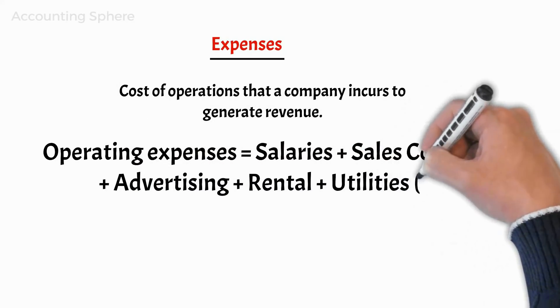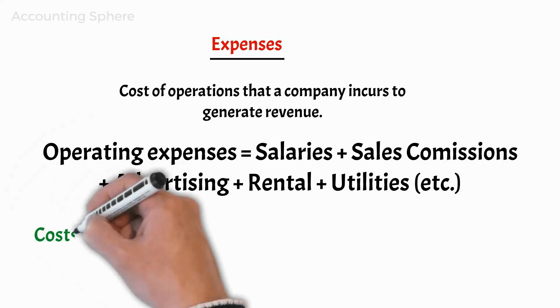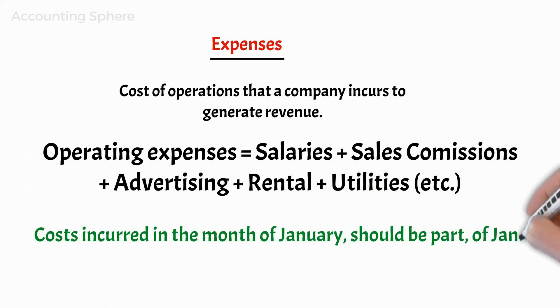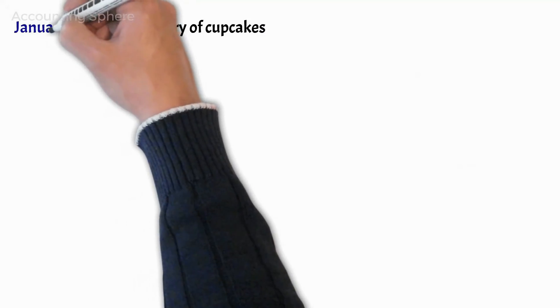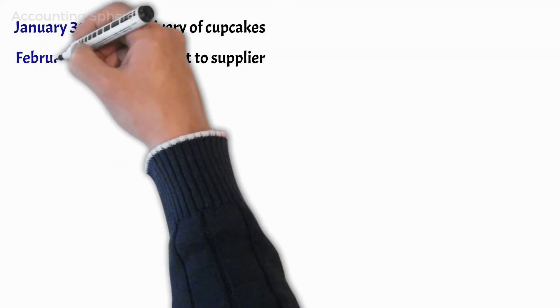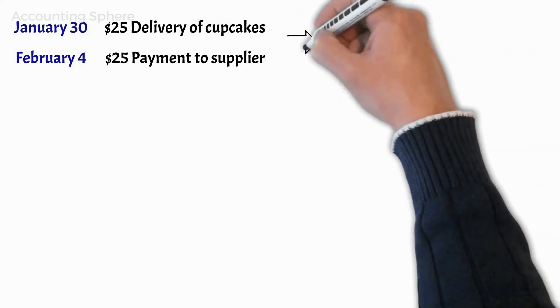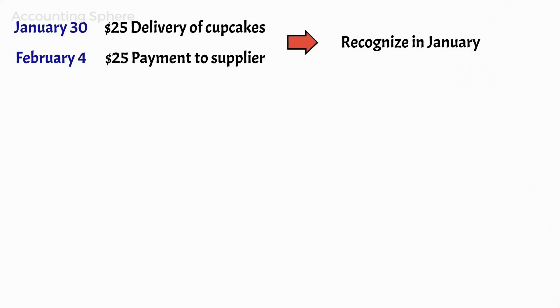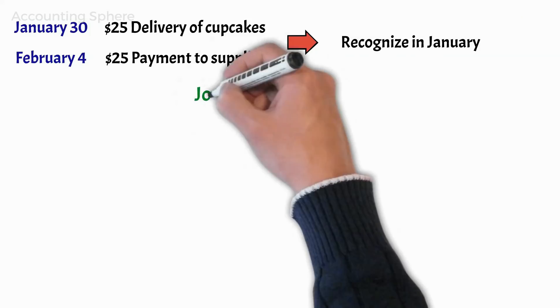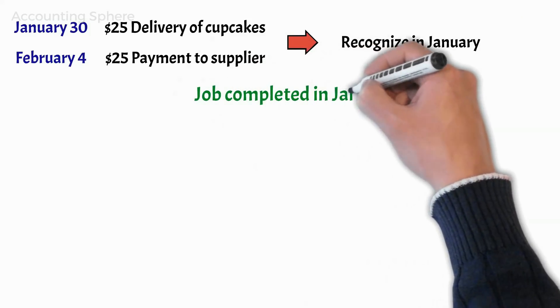Regardless of when the business paid for the expenses, all costs that the business incurs in the month of January should be part of the January income statement. For example, if Michael hires someone to assist him with the January delivery of cupcakes and agrees to pay him $25 on February 4, the expenditure must be included on the January income statement, as it makes no difference when the $25 is handed out. What counts is when the expense was incurred — or in other words, when the job was completed.